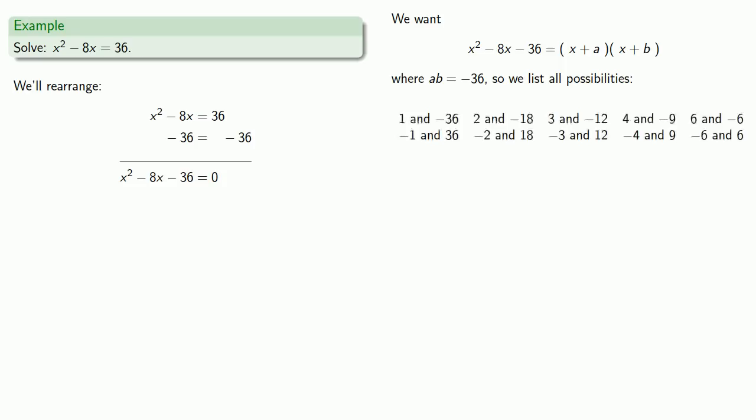Our first terms have to multiply out to x², so we don't have a lot of choice there. We'll make them x and x. But our constant terms could be anything as long as their product ab is -36. So we list all of our possibilities. And again, the only thing we can do at this point is to try every single one until we find one that works. So let's see if 1 and -36 works.